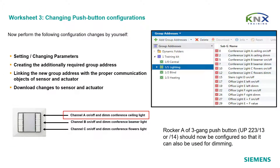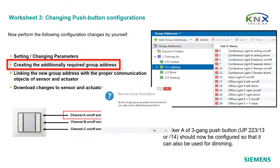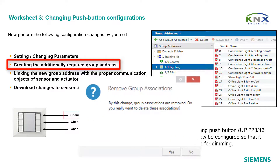Changing push button configurations. The first change to be applied is the function of conference ceiling light A on the switching dimming actuator. Instead of purely switching, now also dimming should be enabled. Try to do the required steps on your own. Start with the parameters of the push button, then create the new group address. When you change the rocker configuration of rocker A, ETS will prompt you to accept that group address links will be removed — you must accept it in order to proceed.